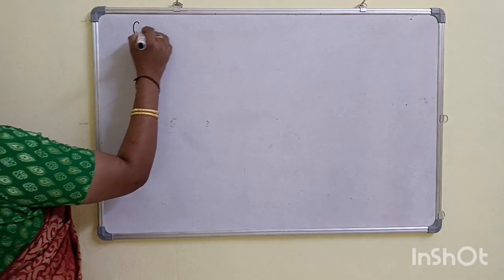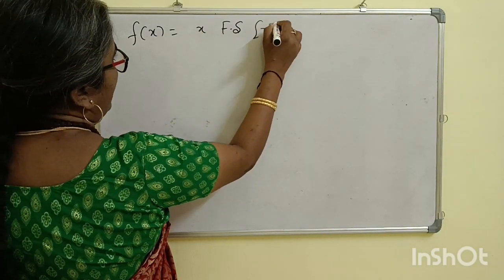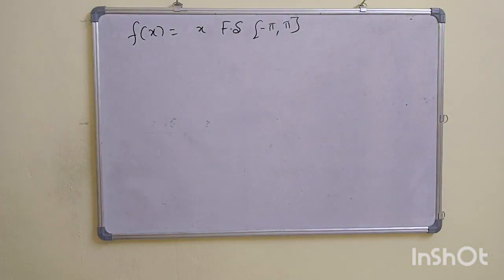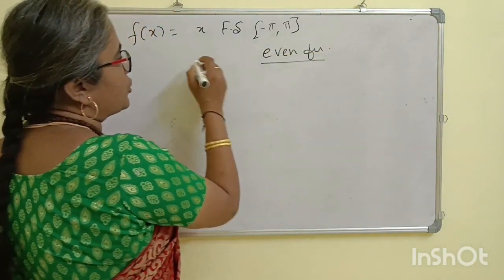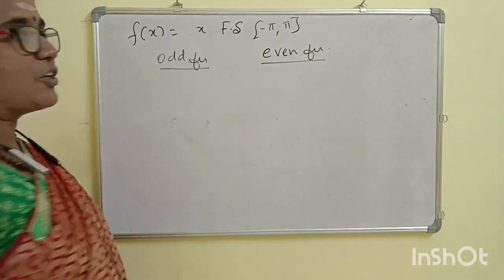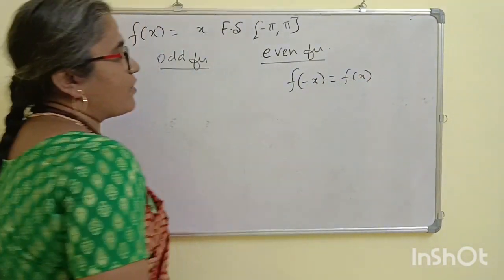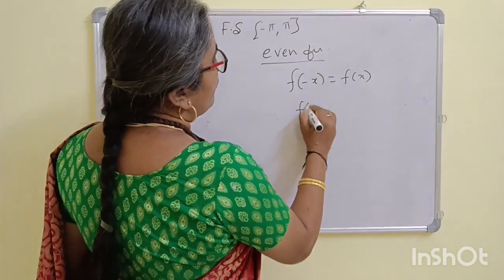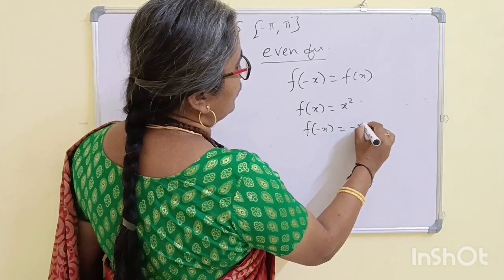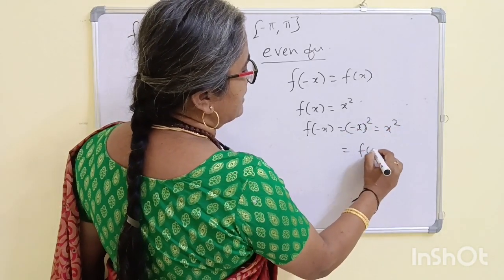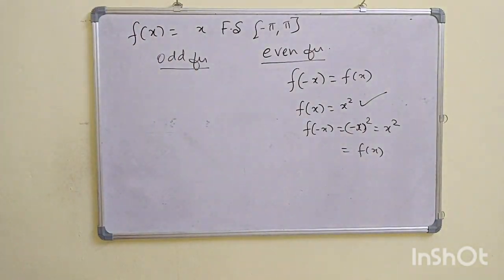Find the Fourier series for f(x) = -x on the interval (-5, 5). We can calculate whether the function is an even function or an odd function. For an even function: f(-x) = f(x). For example, if f(x) = x², then f(-x) = (-x)² = x² = f(x), so x² is an even function.